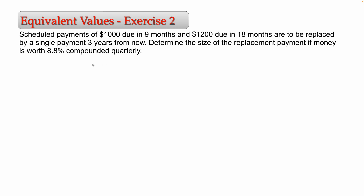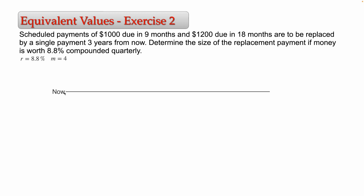The first thing I'm going to take into account is the interest. We have an interest that is equal to 8.8%. And besides this nominal rate of interest, we know that it compounds quarterly, so N equals four — there are four compound periods in a year. I also need to think about the timeline, starting from this moment in time as the origin.